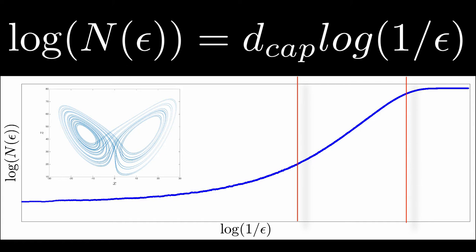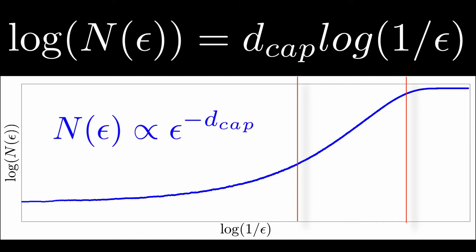The middle region is the interesting region for us. In the literature, this region of a log-log plot, when studying a power relation such as this one, is called a scaling region. The slope of this straight line will be an approximation, in this case, of the capacity dimension.